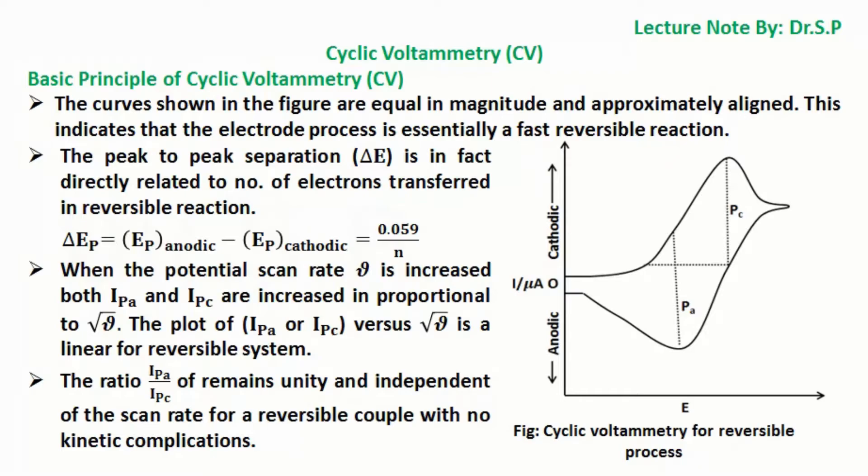The peak-to-peak separation delta E is in fact directly related to the number of electrons transferred in a reversible reaction. Delta EP equals EP anodic minus EP cathodic equals 0.059 by N.